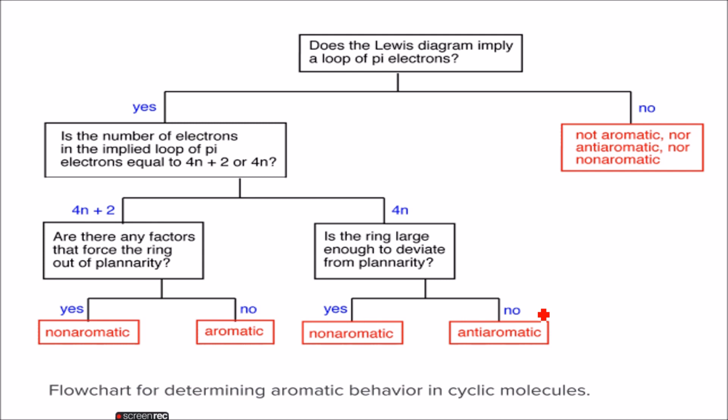planar, and it should obey 4n plus 2 pi electron rule, that is Hückel's rule. The first two things - that the molecule should be cyclic and planar - planarity of the molecule is very important in order for a molecule to have aromatic behavior. This flowchart will help you determine whether your molecule is aromatic, non-aromatic or anti-aromatic. You can justify by posing some examples to this flowchart by asking certain questions to your molecule.